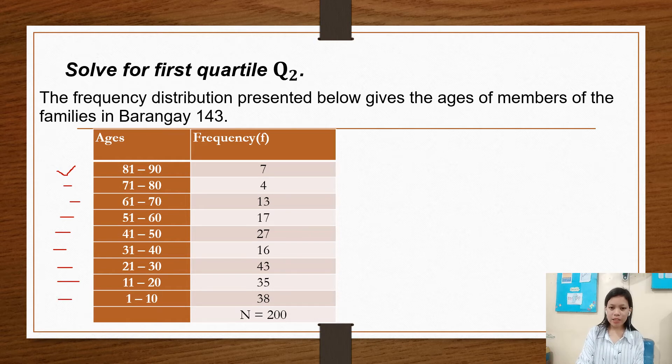So in 81 to 90 ages there are 7, in 71 to 80 there are 4, in 61 to 70 there are 13, 51 to 60 has 17, 41 to 50 has 27.